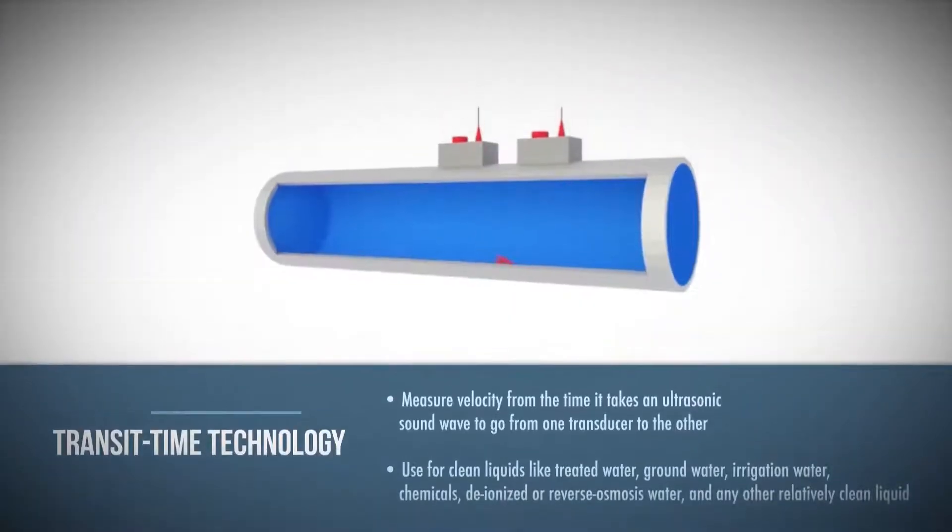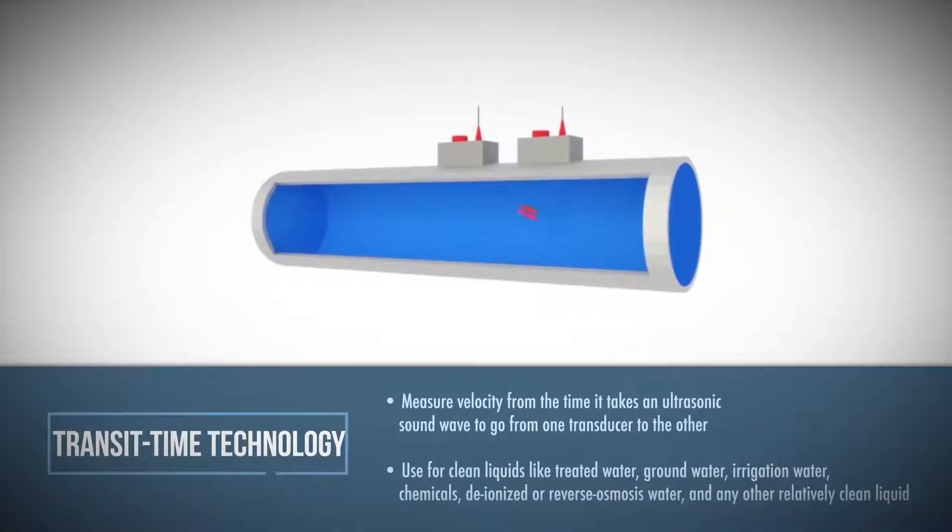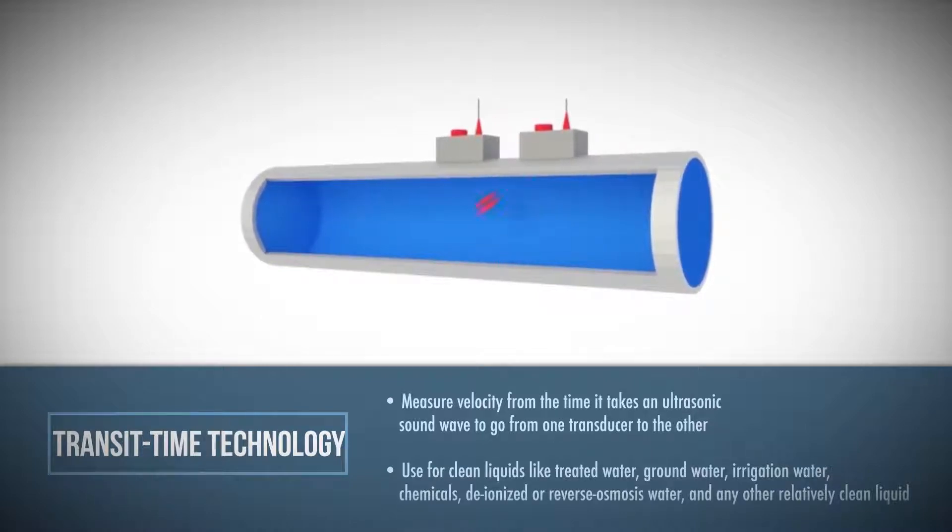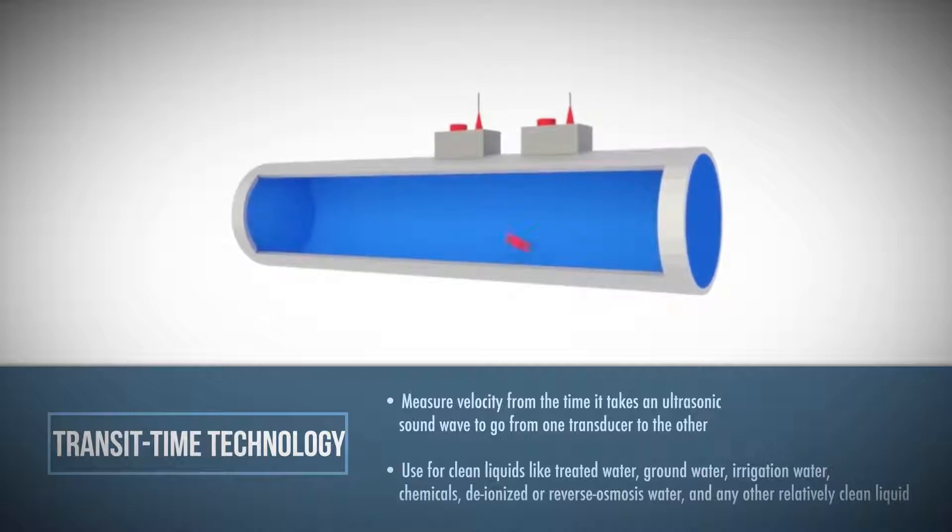Transit time technology calculates fluid velocity by measuring the time required for an ultrasonic sound wave to travel between transducers. The amount of time will change as the flow velocity changes. Use the transit time flow meter for clean liquids like treated water, groundwater, irrigation water, chemicals, deionized or reverse osmosis water, and any other relatively clean liquid.